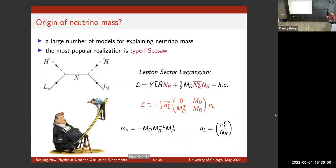On the origin of neutrino mass: there are many models at tree level and radiative level. The most popular realization is the type-1 seesaw, where you add right-handed neutrinos and form a lepton portal between the Standard Model doublets, the Higgs, and the right-handed neutrino. You put a mass for the right-handed neutrino, build the mass matrix, and diagonalize it. The higher the right-handed neutrino mass, the lighter the active neutrino — illustrated with one of those funny seesaw pictures.